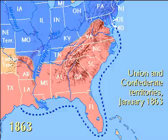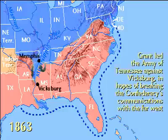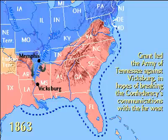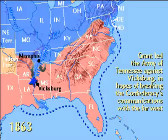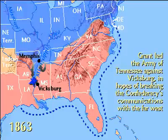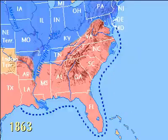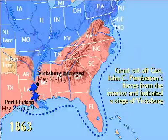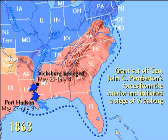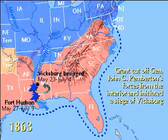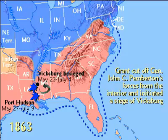At the start of 1863, Grant had failed to take Vicksburg, Mississippi. Leading the Army of Tennessee against the city, he had hoped to break the Confederacy's communications with the Far West. By summer he was determined. With direct attacks failing, Grant cut off Southern General John C. Pemberton's forces from the interior and settled in for a siege.